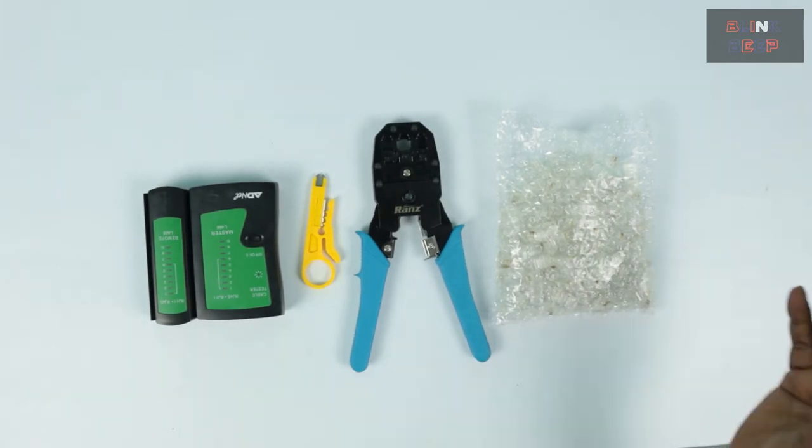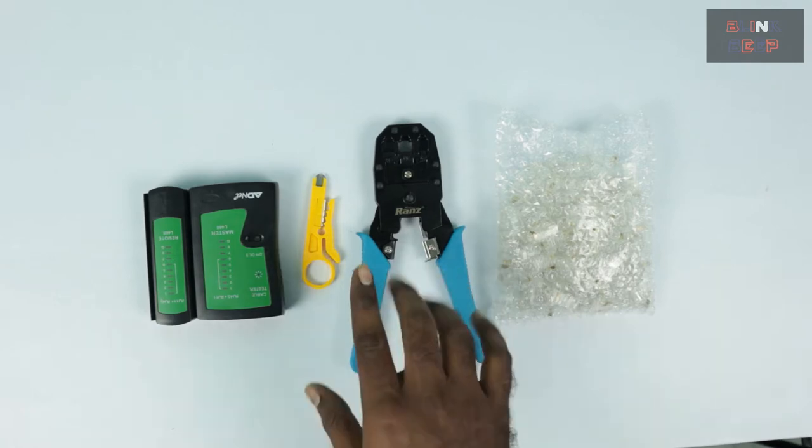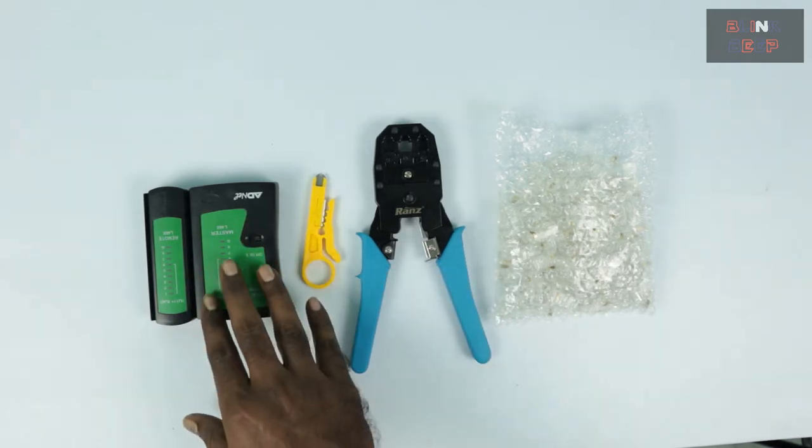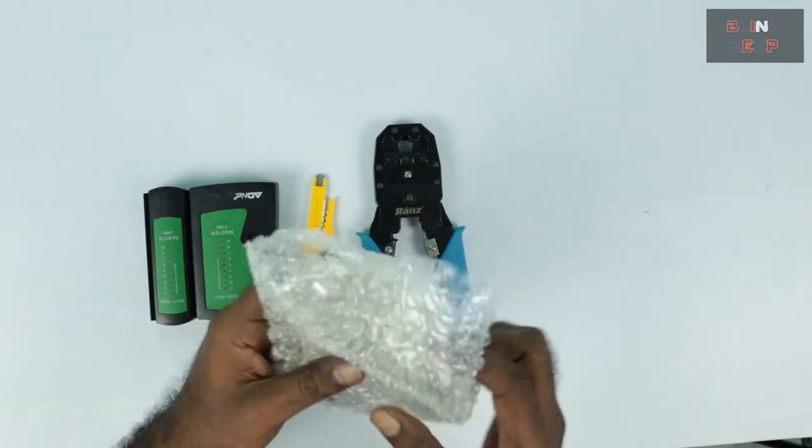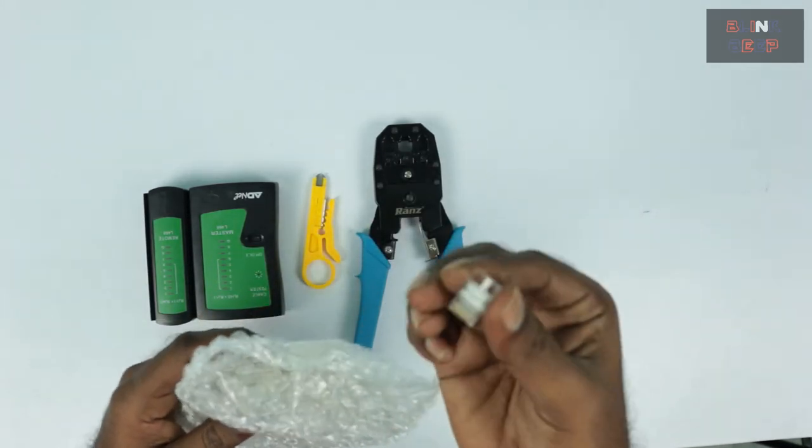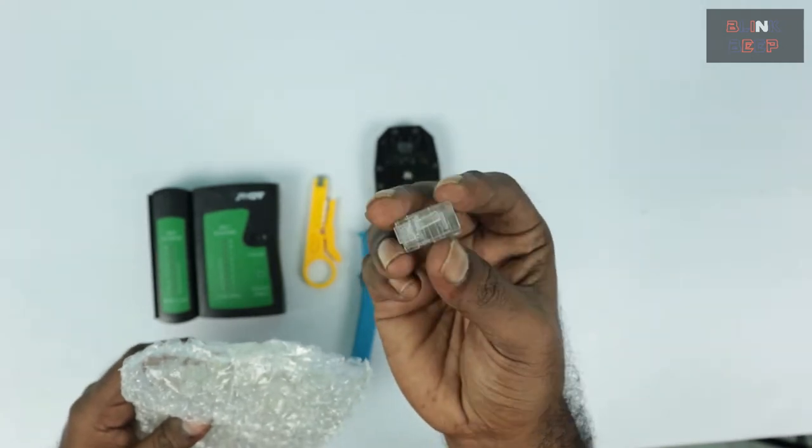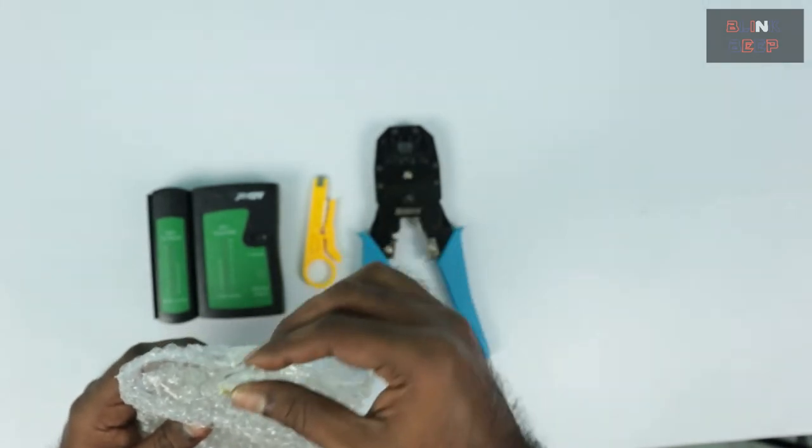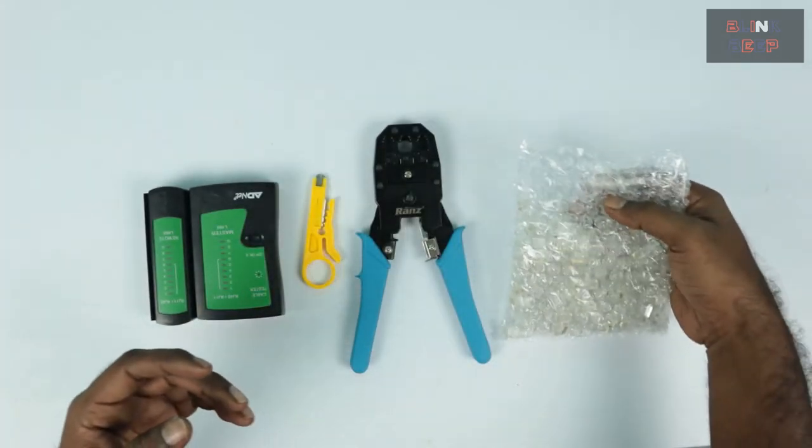Okay guys so here we are, we have all the tools laid out here. We have the crimping tool, the cutter, the tester and the connectors. The connectors, this is how it's going to look like. I'm pretty sure that you would have seen this already. So we get like hundreds of this with the one that we purchased.